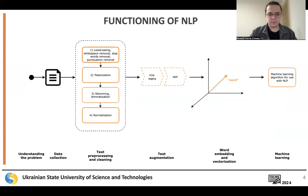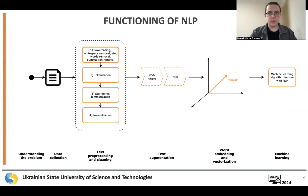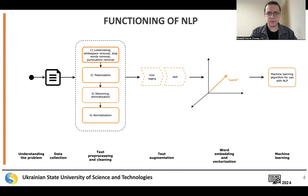The main stages of NLP function are as follows: understanding the problem — in our case, it involves determining the intents — data collection, and input data determination, which refers to what the user inputs into the system as their query. Further stages include text normalization, preparing it for processing, grammatical word tagging, named entity recognition, vectorization, and utilizing machine learning algorithms for NLP tasks.